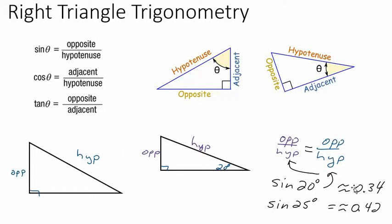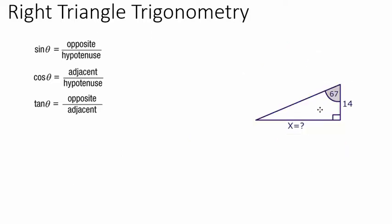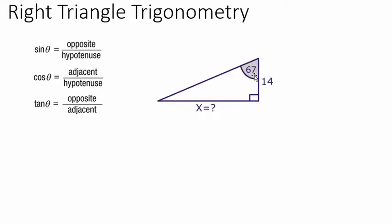Now, how do we use these ratios to solve problems? It's important to understand why they work — they're based on similar triangles, not just formulas from a math book. So let's say we have a triangle where we know this angle is 67 degrees and this side is 14, and we want to figure out the unknown side.